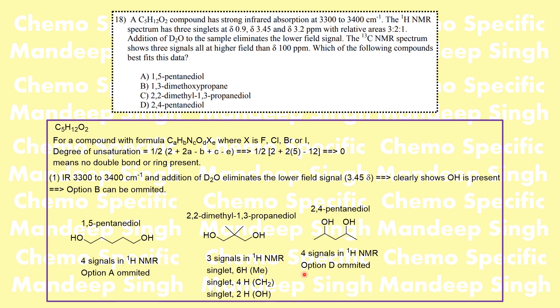For option D we are again going to see a total of four signals in the NMR. So based on the NMR data alone we can identify the correct answer as option C, consistent with the 13C data as well.